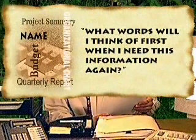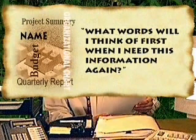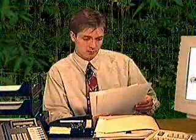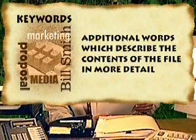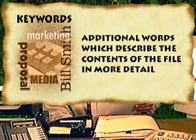The Paper Tiger software asks you to specify a descriptive name for each item you file. To think of a name for an item, ask yourself: what words will I think of first when I need this information again? Think of the name as the title of the file. Keywords are additional words which describe the contents of the file in more detail. You can enter as many keywords as you wish into the system for each item. The more you enter,